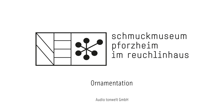One particularly fascinating example of the way mathematics, nature and aesthetics intersect is known as the golden ratio. This is when the relation between two quantities remains the same, even as their absolute size decreases or increases. Perhaps the most famous example of this in nature is the spiral of a snail's shell.